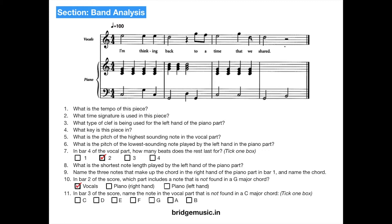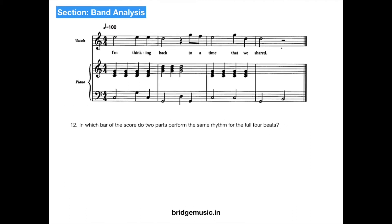In bar 3 of the score, name the note in the vocal part that is not found in the C major chord. The C major chord is made up of C, E, and G. Here we have E and G, and the D note — so D is the correct answer. In which bar of the score do the two parts perform the same rhythm for the full 4 beats? The bass clef and the vocal part are playing the same rhythm in bar 1.